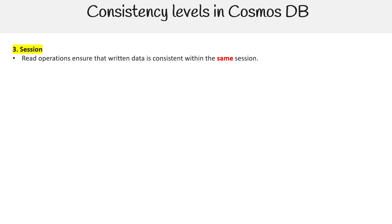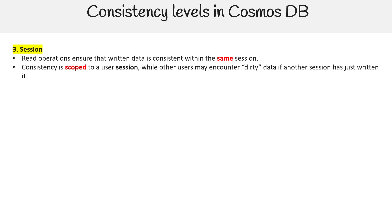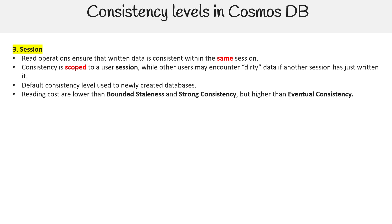For session consistency, read operations ensure that written data is consistent within the same session. Consistency is scoped to a user session, while other users may encounter dirty data if another session has just written to it. It's the default consistency level used when creating a newly created database. Reading costs are lower than bounded staleness and strong consistency, but higher than eventual consistency.